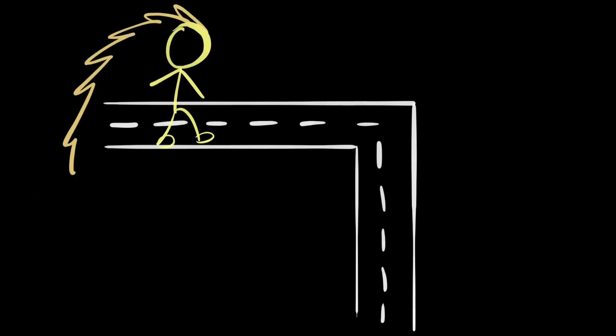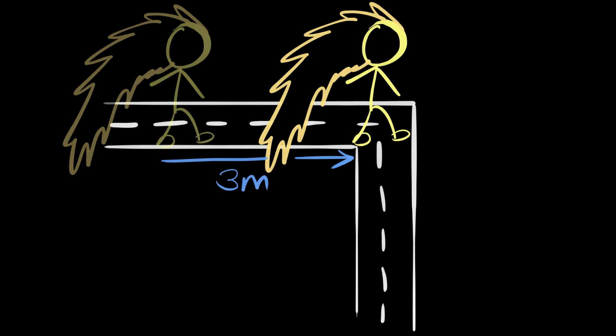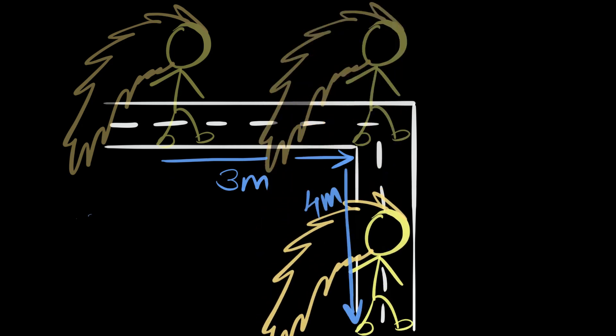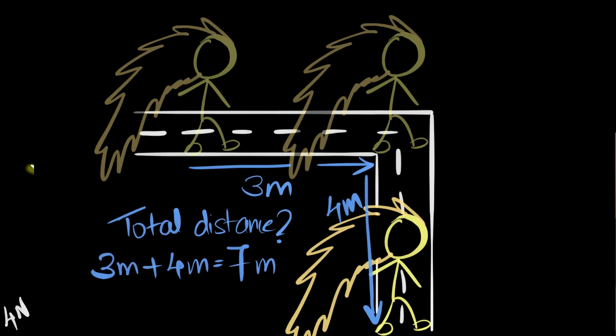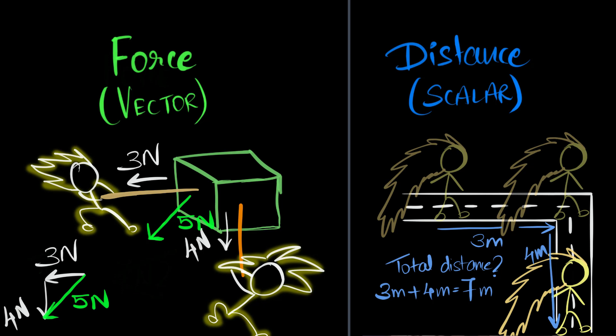On the other hand, if you were to consider distances, let's say this dude travels three meters to the right and then travels four meters down. And now I ask you, what's the total distance traveled? That's just three plus four, seven meters. Distance does not depend on the direction. Distance is a scalar.